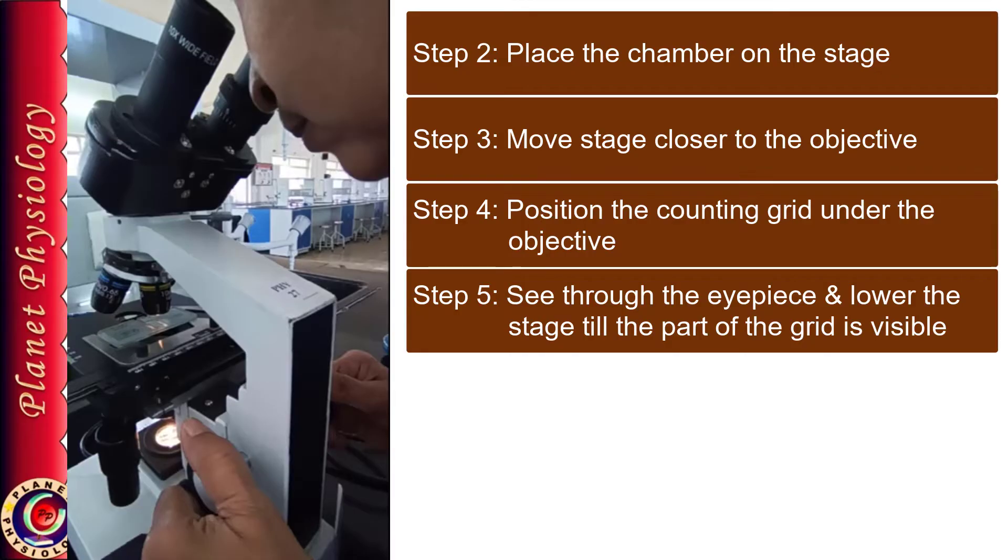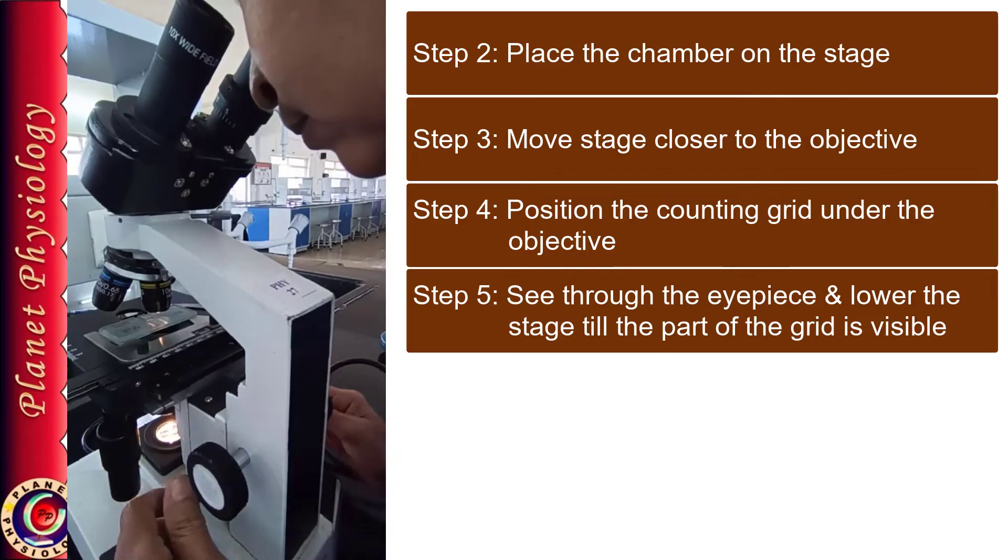It may be any part, you are not sure which part will appear. So till you see some part of the grid, continue to increase the distance between the objective and the stage. Once some lines are visible, now clearly focus that particular part of the grid with the help of fine adjustment screw.